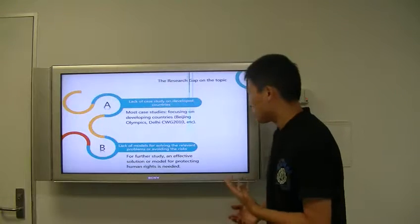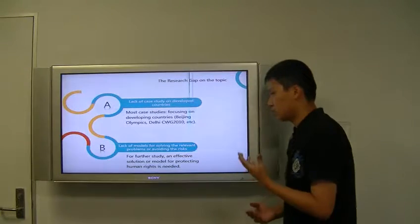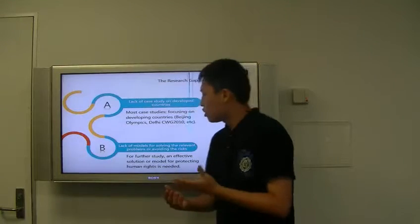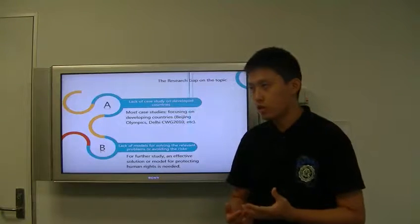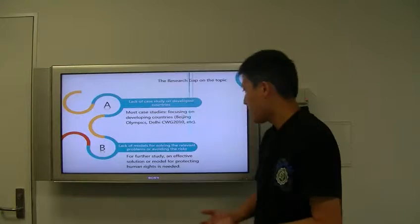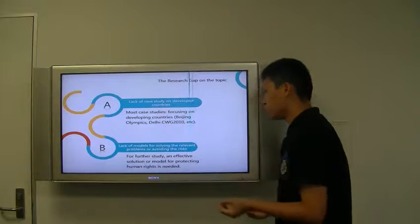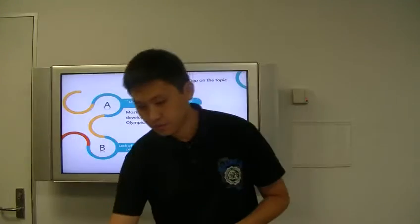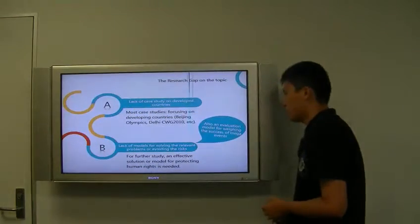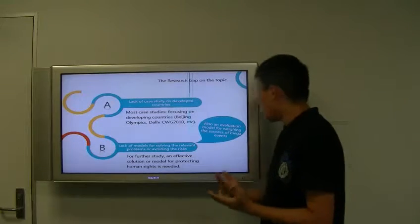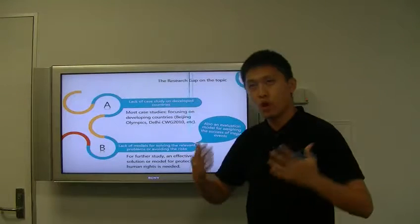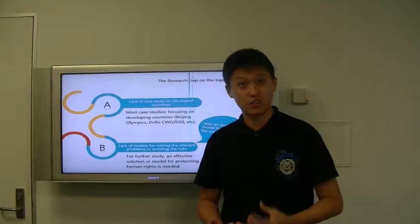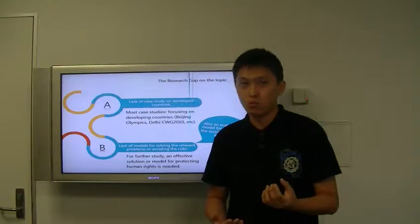And secondly, the lack of models for solving the relevant problems and avoiding the risks. Every time we're talking about solutions, we're talking about models for solutions. So for further study, I think an effective solution or model to protect human rights is highly needed. And additionally, maybe an evaluation model for weighing the success of mega events, weighing the pros and cons, to redefine what is the real success for mega events like Olympic Games and Commonwealth Games.